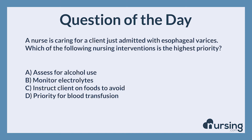A nurse is caring for a client just admitted with esophageal varices. Which of the following nursing interventions is the highest priority? A. Assess for alcohol use. B. Monitor electrolytes. C. Instruct client on foods to avoid. D. Priority for blood transfusion.